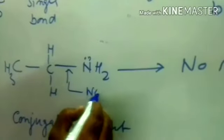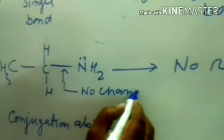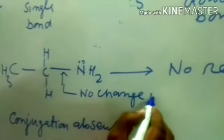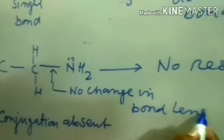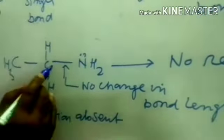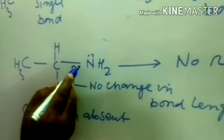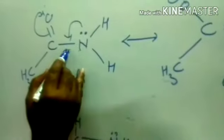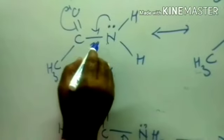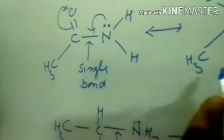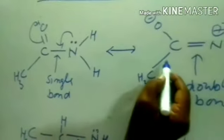No change in bond length — that is, it maintains the single bond length. Whereas in acetamide, this bond length does not maintain single bond character, but its character is between single and double, which we call the hybrid bond length.